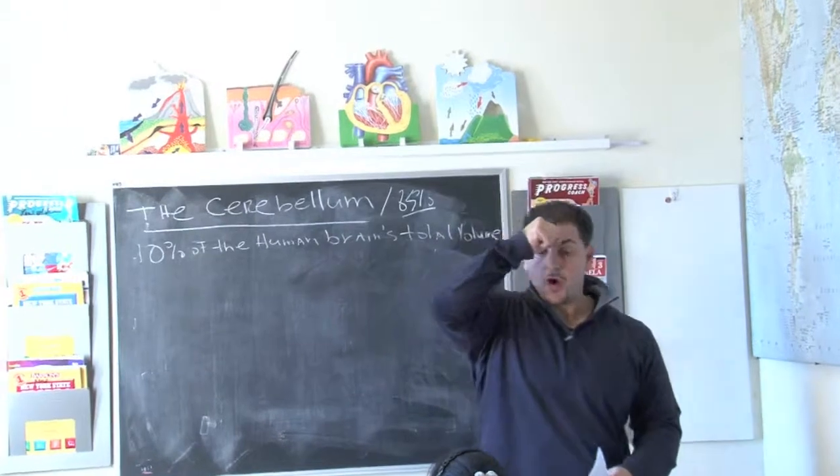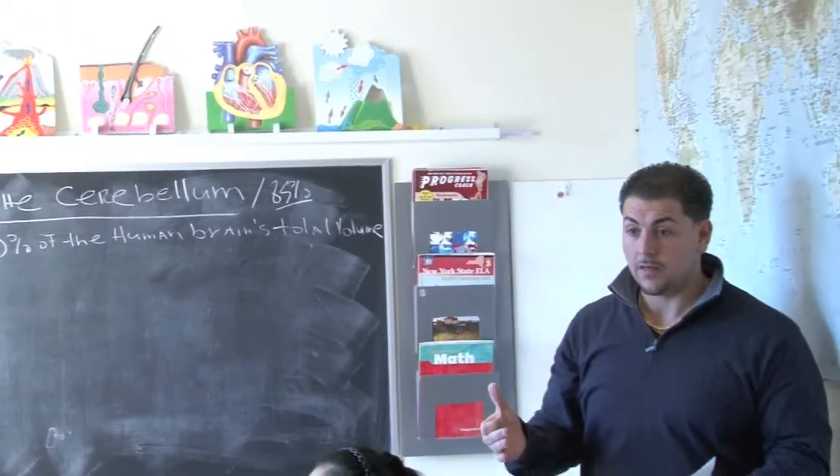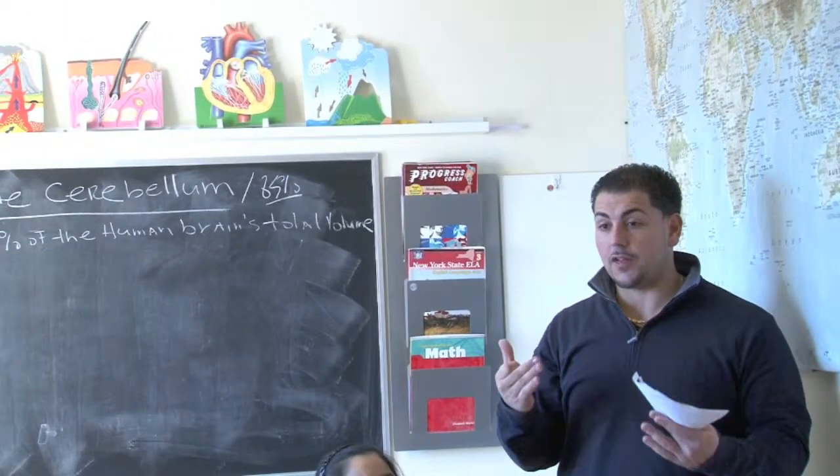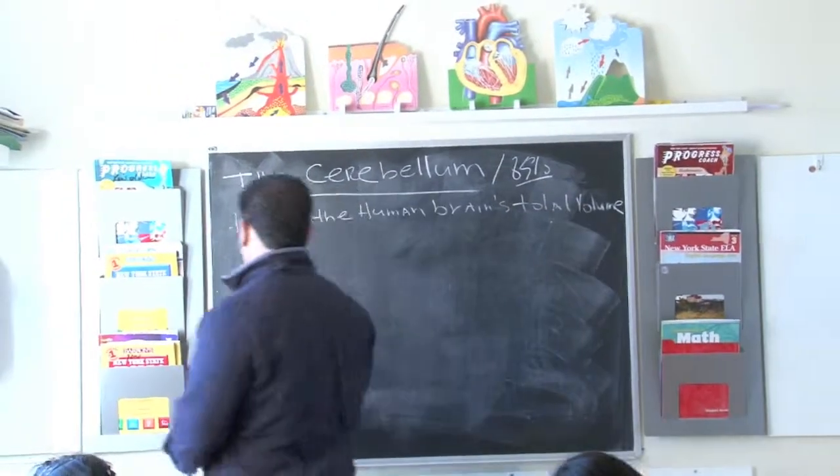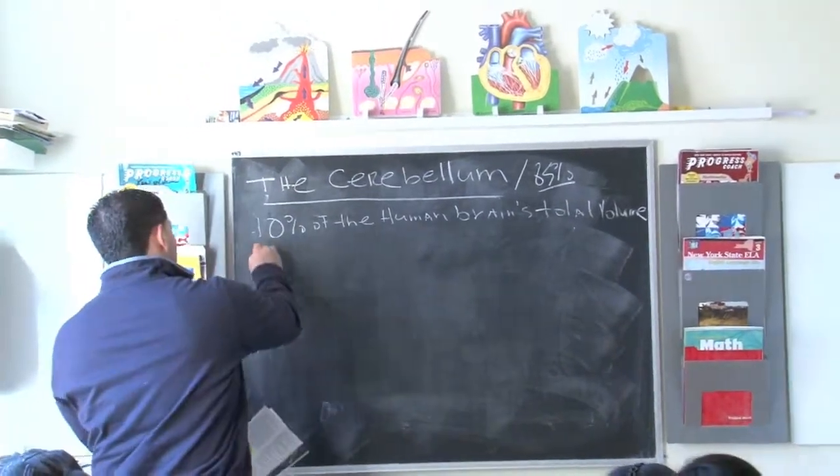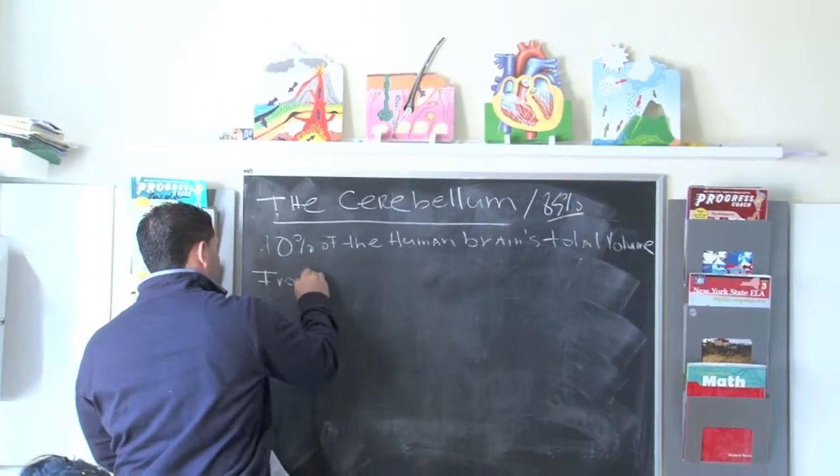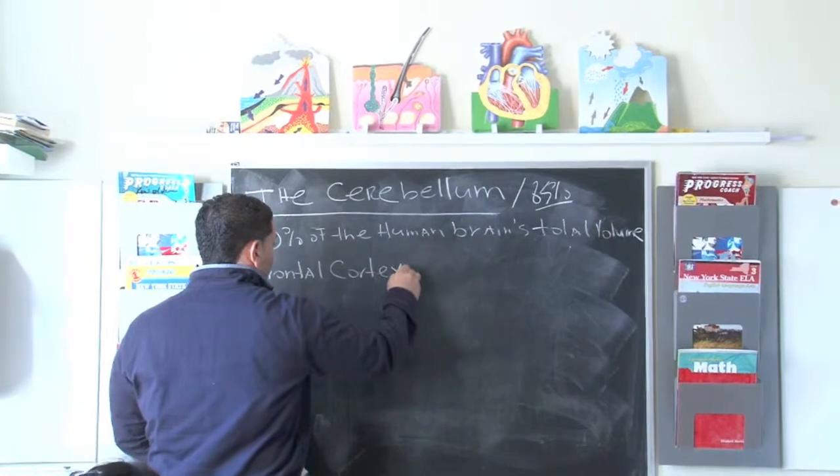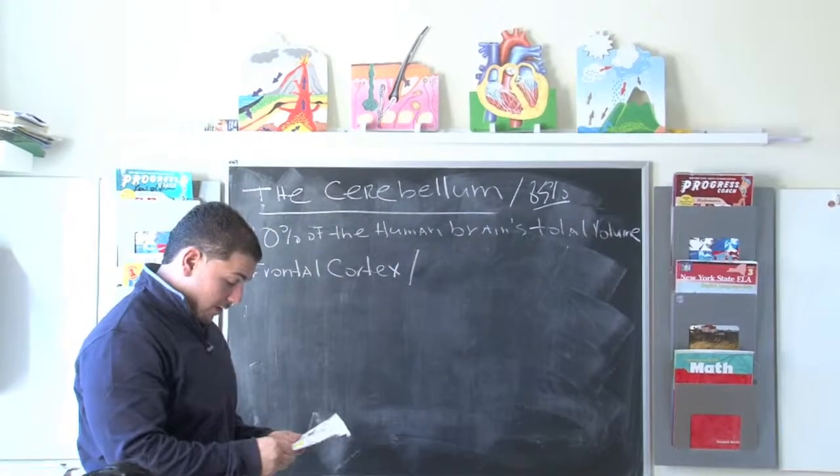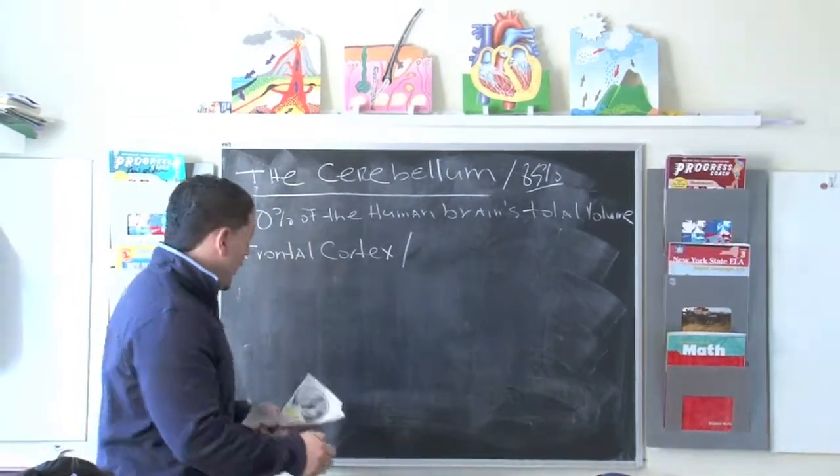What we call the forebrain. The forebrain or the frontal cortex. So if you want to get really fancy, the front of the brain is called the frontal, F-R-O-N-T-A-L, cortex. Otherwise known as what we just discussed, the cerebrum.